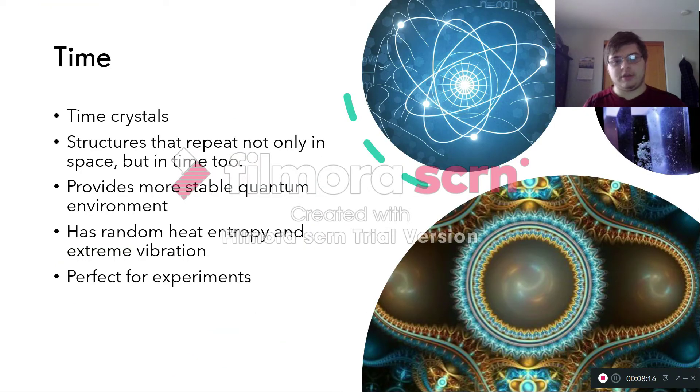Now, last thing before I continue is this interesting fact about time. There are these items called time crystals. They're basically structures that repeat not only in space, like in positions, but also in time too. They provide a more stable quantum environment and has random heat, entropy, and extreme vibrations, which are perfect for quantum experiments. And maybe through time crystals, we might be able to understand more about time and maybe even quantum mechanics.